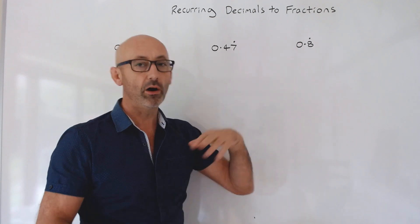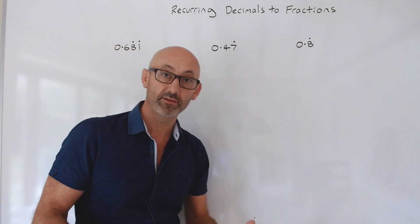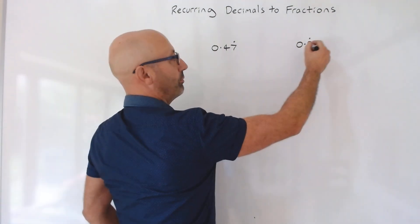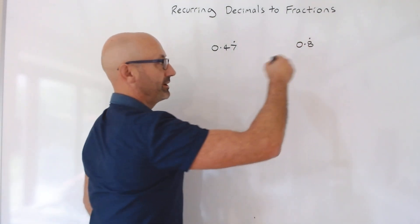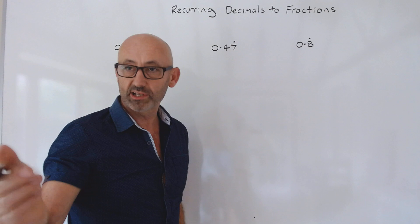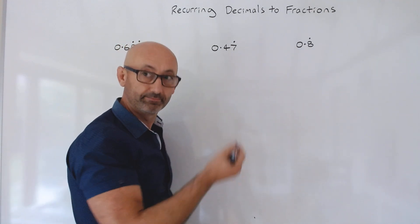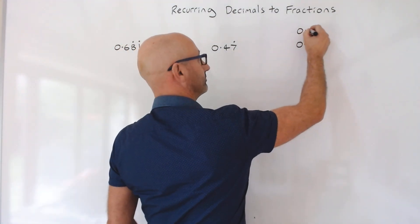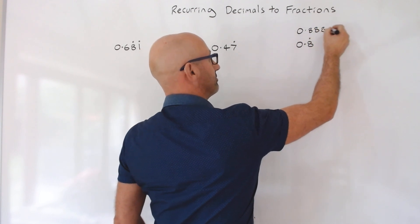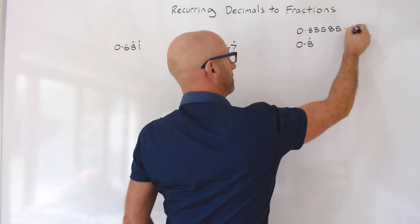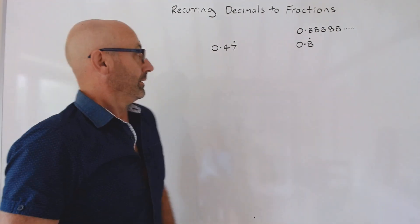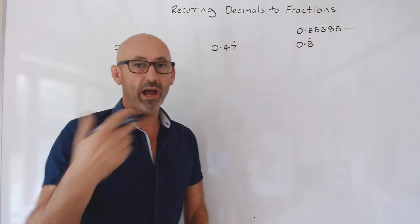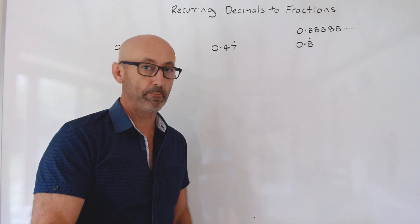I find that in order to make sense of this, if I write 0.8 with a dot above it recurring — what does that actually mean, Nina? 0.888... Yeah, okay. So I'm just going to write a few of these out like that, and that will help me with the next bit of it.